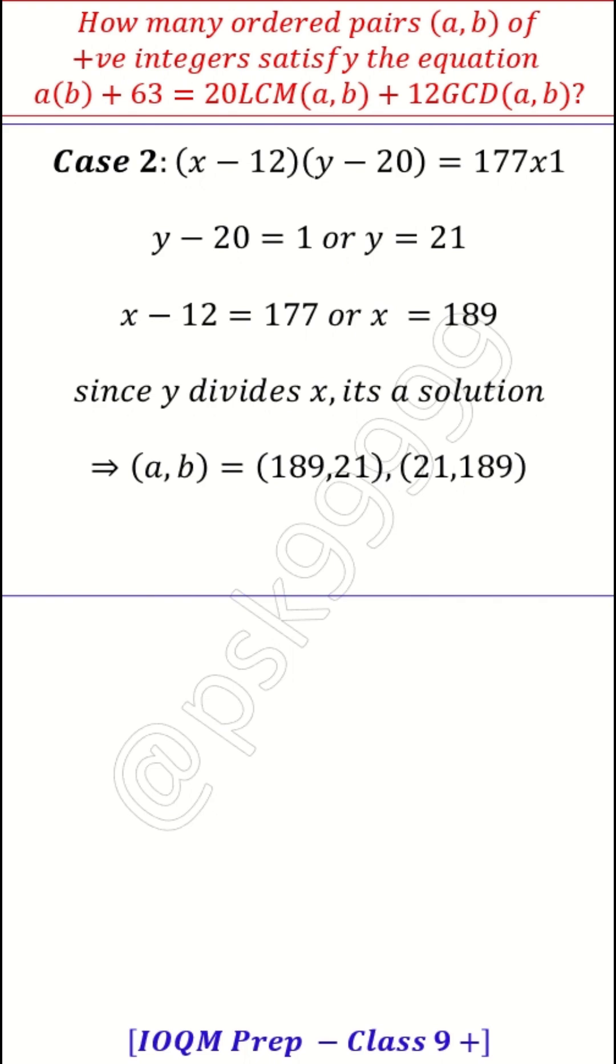And (a, b) is (189, 21). He is asking about the ordered pairs. So don't make a mistake. There are two numbers, but you can call it (189, 21) or (21, 189). So two ordered pairs are possible. Thank you.